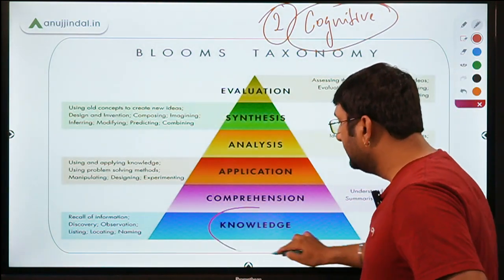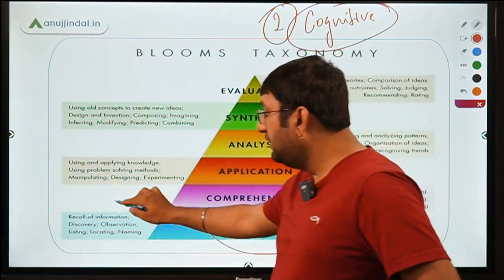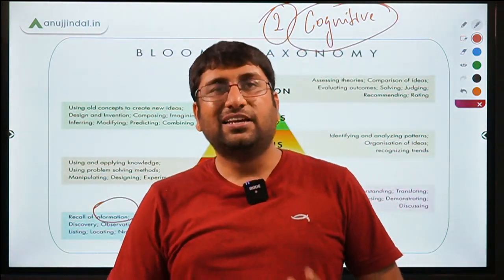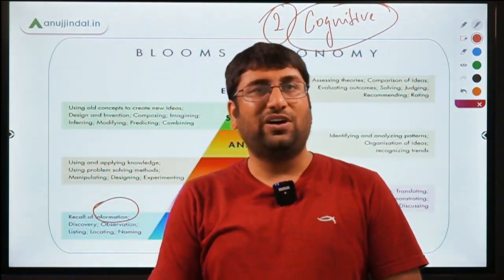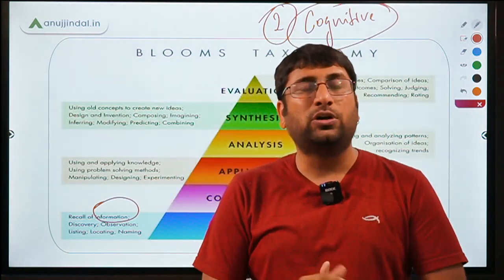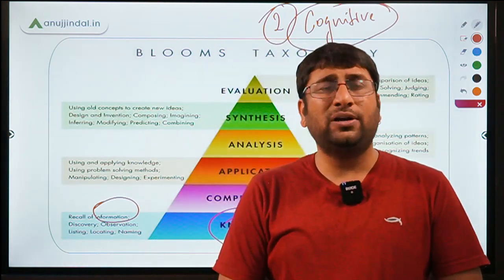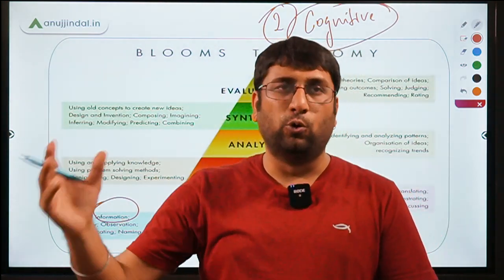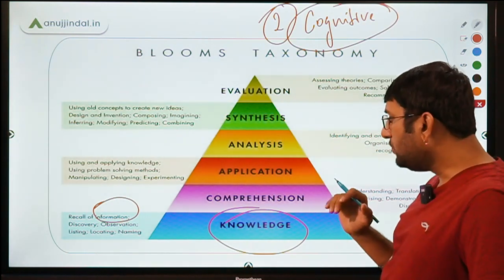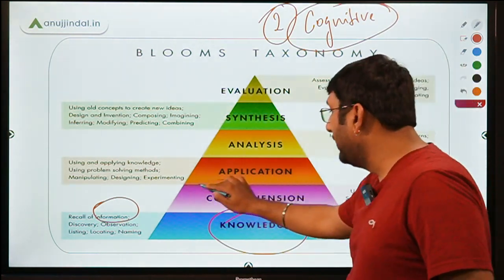The very first step is the knowledge domain — first of all, you have information. For instance, if you don't know that there is a live session happening on Telegram today, you might miss it. So first, having information and knowledge is essential. The next step is comprehension.